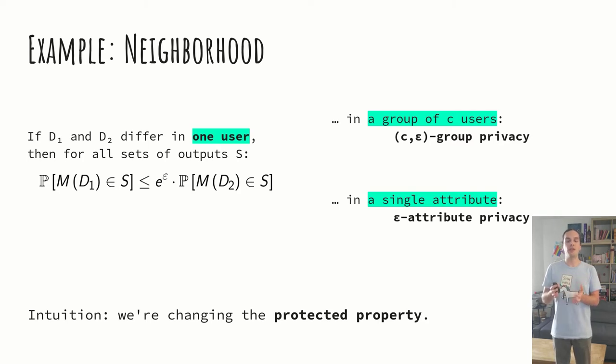What is the intuition behind this? The intuition behind this is that these variants are changing the protected property. The thing that is being changed between D1 and D2. So, changing the neighborhood definition changes the unit of privacy, if you will. What does the definition protect?